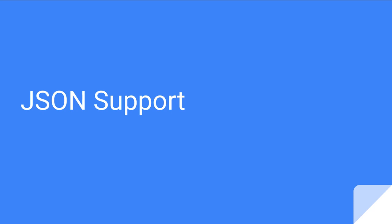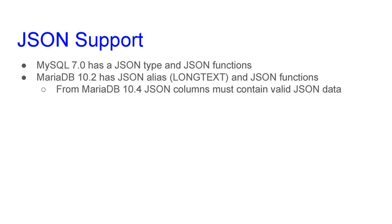Let's start talking about JSON support in MySQL and MariaDB. Support for JSON was added in MySQL 5.7, which has a proper JSON type and several JSON functions, as well as other features we will discuss during the webinar. MariaDB 10.2 implemented JSON as an alias for the type LONGTEXT. So basically you create JSON columns, but they are actually LONGTEXT columns containing strings. In version 10.4, it is more strict because it checks if the strings you are inserting are valid JSON documents.